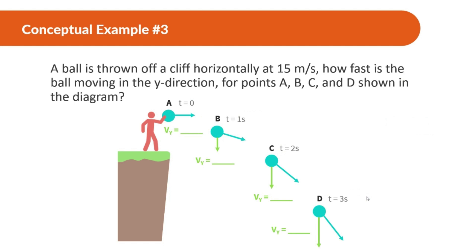Same ball thrown off a cliff horizontally at 15 meters per second. How fast is the ball moving in the Y direction for every point A, B, C, and D? Right when it's thrown, the velocity in the Y direction is zero because it's thrown horizontally. After the first second, gravity is negative 10 meters per second squared, so it's moving negative 10 meters per second. After two seconds, negative 20. After three seconds, negative 30. Every second, gravity changes the velocity in the Y direction by negative 10.